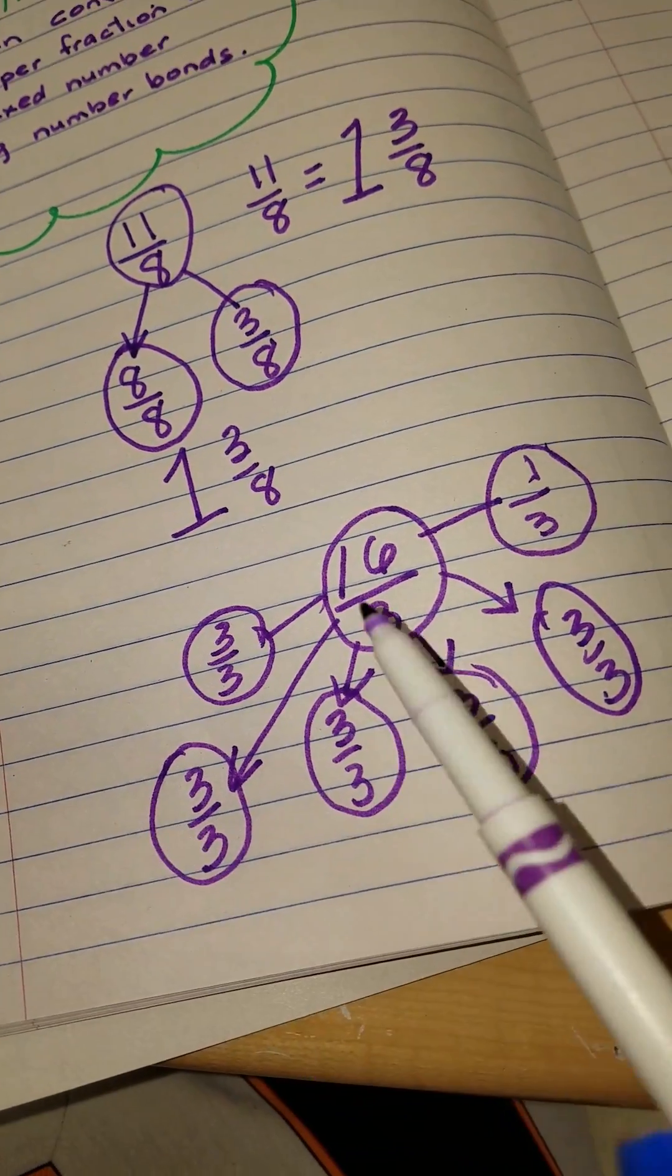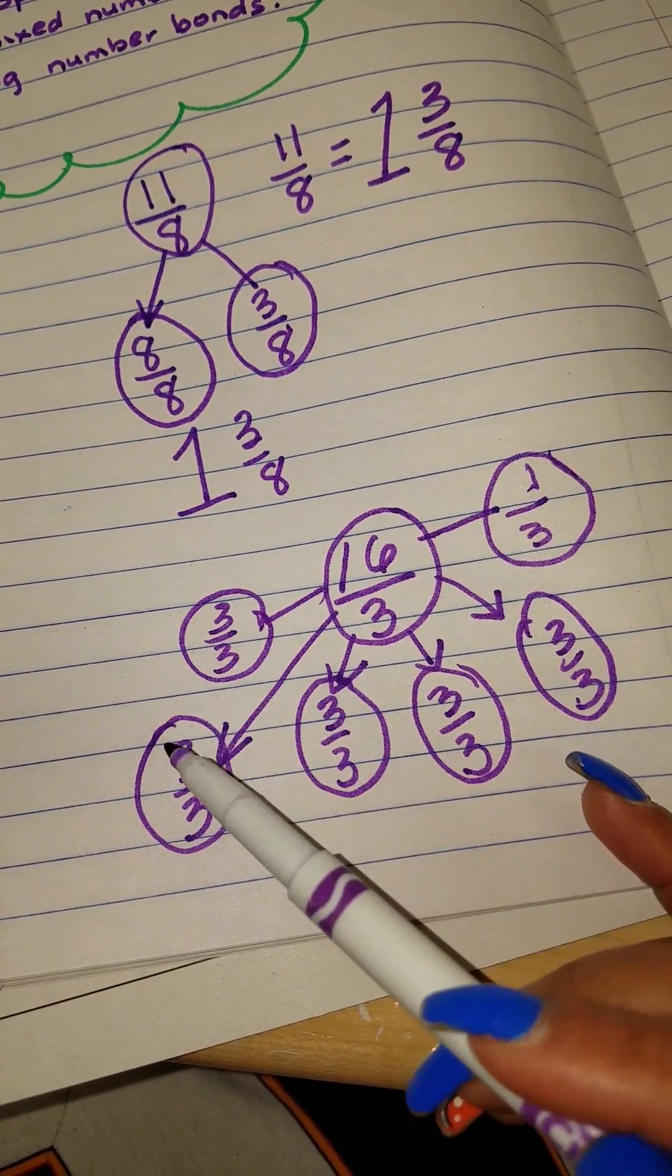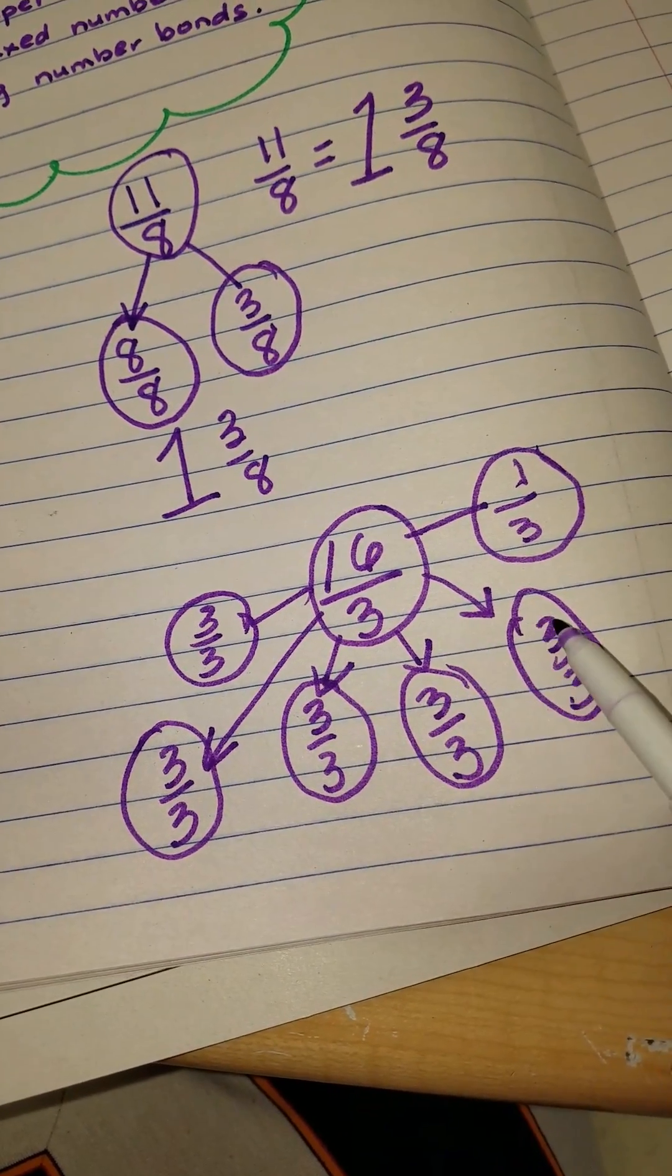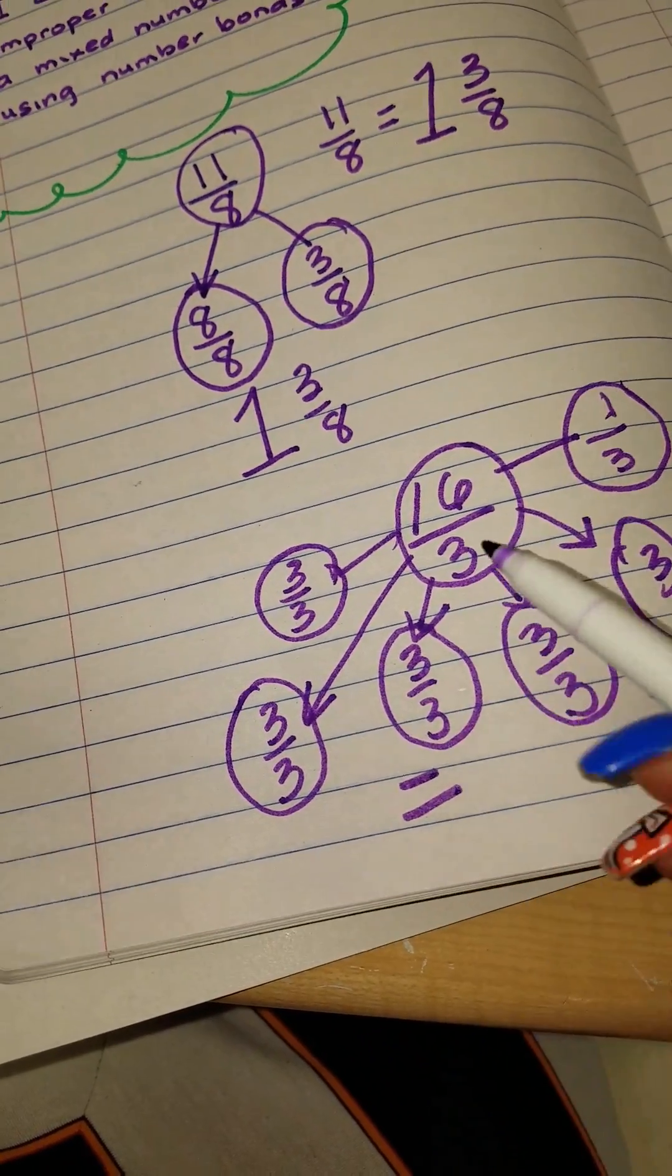And let's just check to make sure that we have gotten 16 thirds. We have 3, 6, 9, 12, 15, and 1 is 16. Now how many wholes do we have?